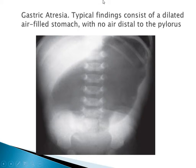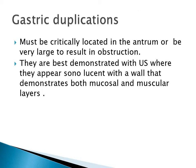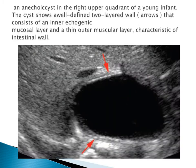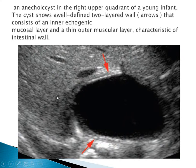This is a case of gastric atresia - findings consist of a dilated air-filled stomach with no air distal to the pylorus. Gastric duplication cysts must be critically located in the antrum or be very large to result in obstruction. They are best demonstrated with ultrasound, where they appear sonolucent with a wall that demonstrates both mucosal and muscular layers. This example of gastric duplication cysts shows a large cystic lesion in the upper quadrant with two layers visible.